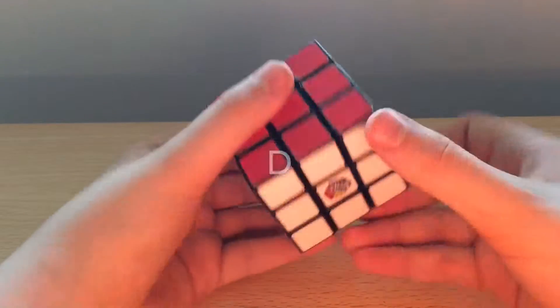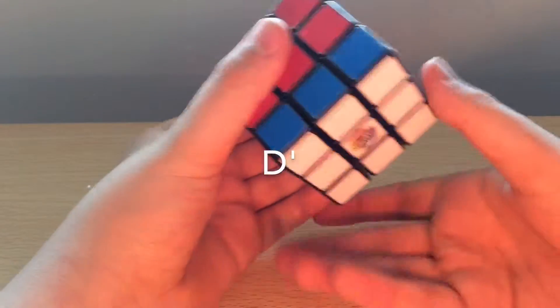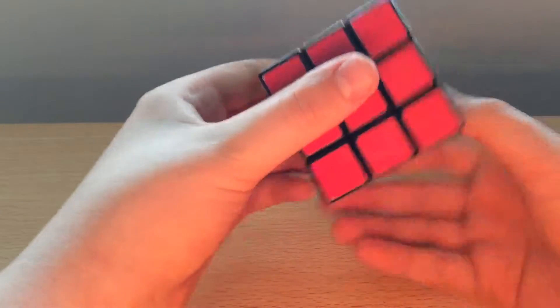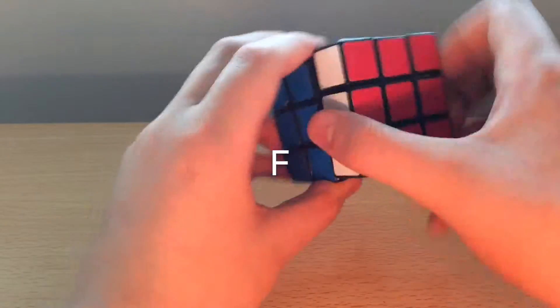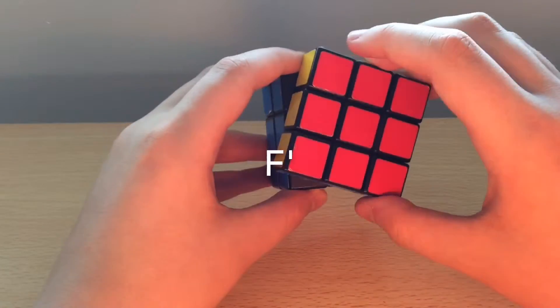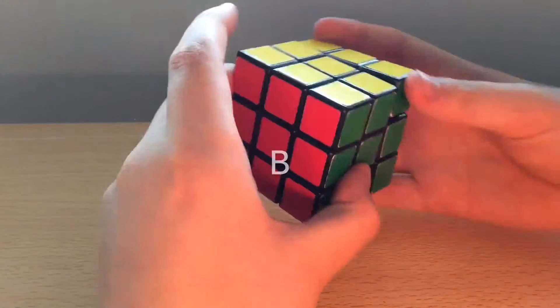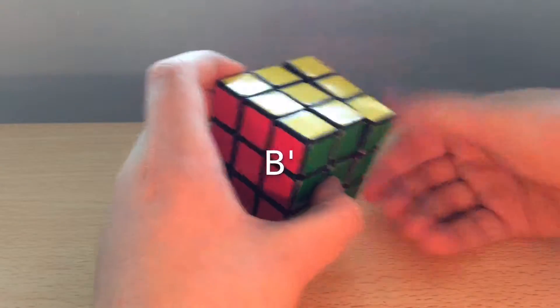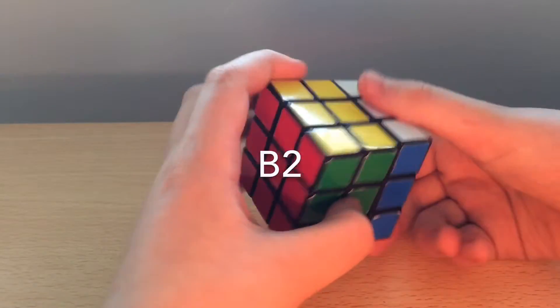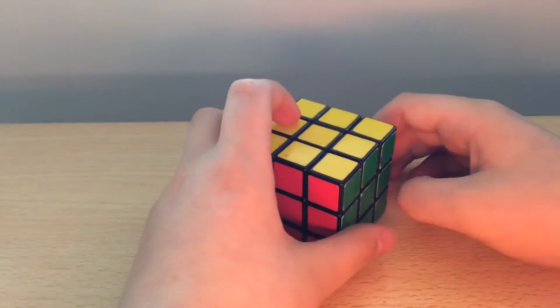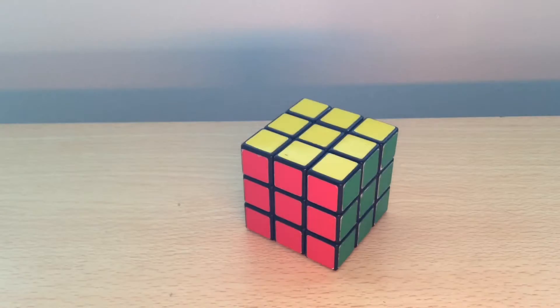And then we've got D, D prime, and D2 like that. And then we've got F, F prime, and F2. And then B, B prime, and B2. And those are the beginners notation that we need to use.